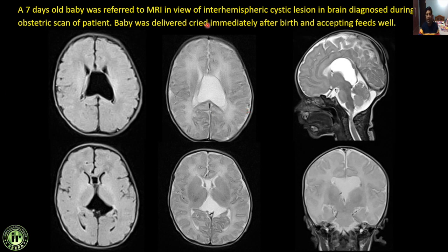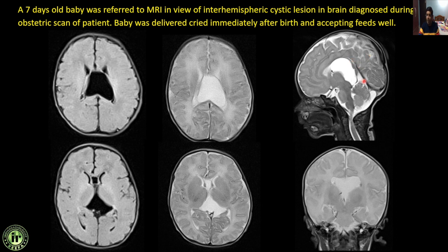Next: a 7-year-old baby referred for MRI after an interhemispheric cystic lesion was found on routine obstetric scan. The baby cried immediately after birth. There is a cystic lesion between the bilateral lateral ventricles, triangular in shape — the tip pointing towards the foramen of Monroe, the base pointing towards the corpus callosum — causing elevation and posterior displacement of the internal cerebral veins. Whenever you see this configuration with displacement of the corpus callosum posterosuperiorly and internal cerebral veins inferiorly, think of cavum velum interpositum cyst. This is a classical case of cavum velum interpositum cyst.